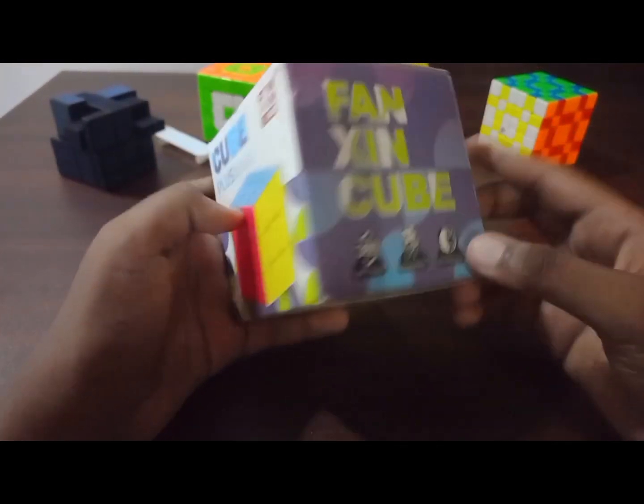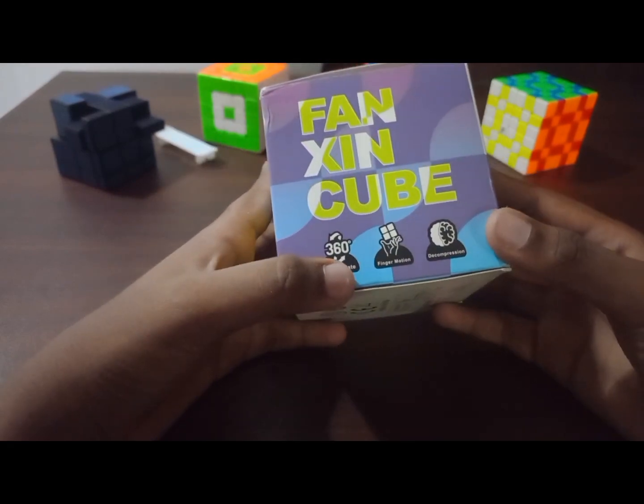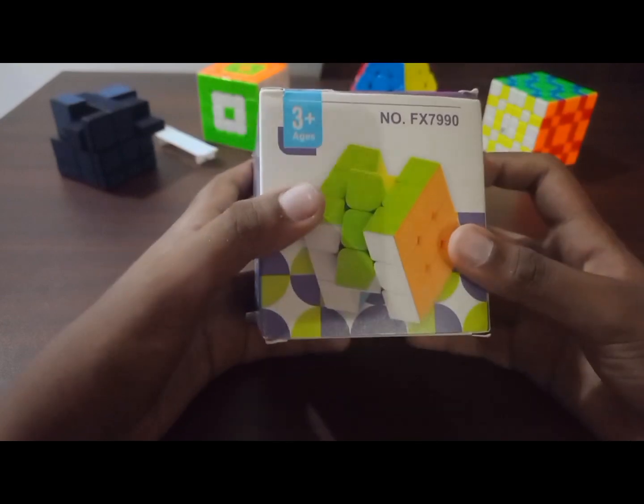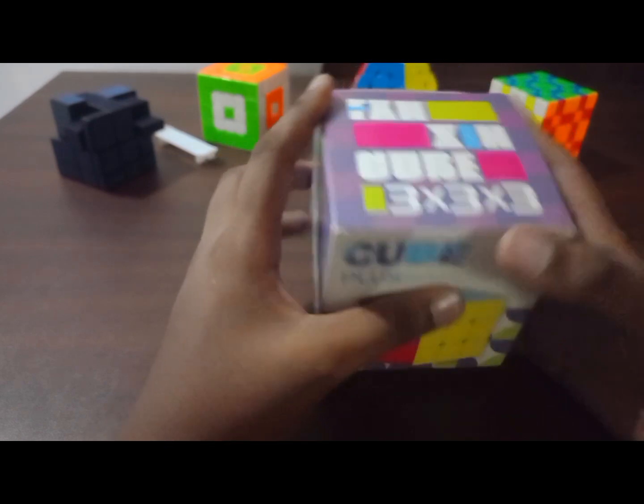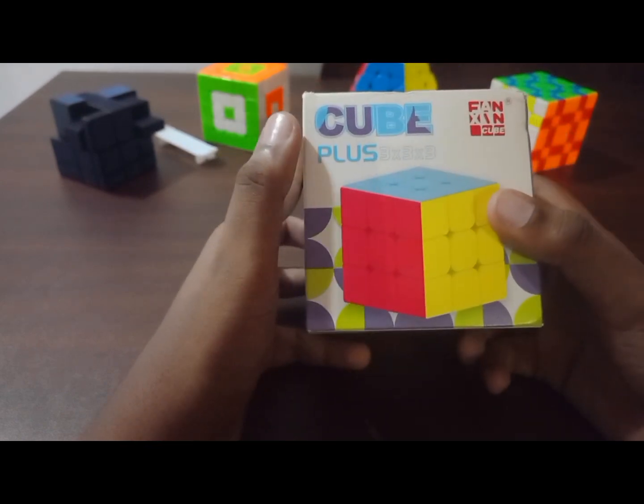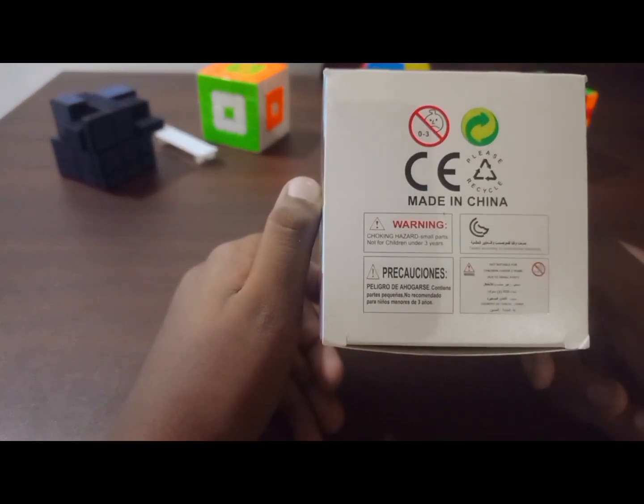There's nothing much in the box. There's a 360 rotate finger motion decompression label and 3+ ages. Then there's Vaccine Cube 3x3, Cube Plus 3x3. There's a warning, never mind.